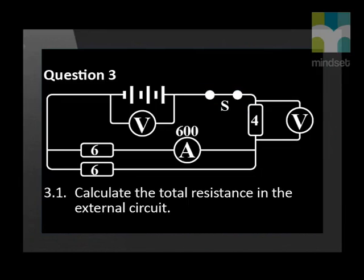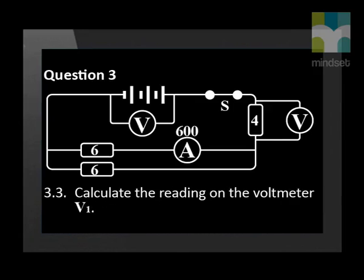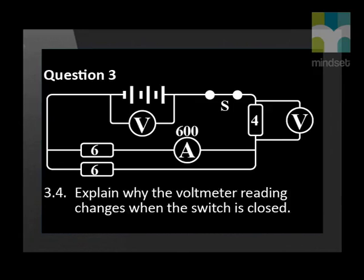Calculate the total resistance in the external circuit. Calculate the internal resistance of the battery. Calculate the reading on the voltmeter V1. Explain why the voltmeter reading changes when the switch is closed.